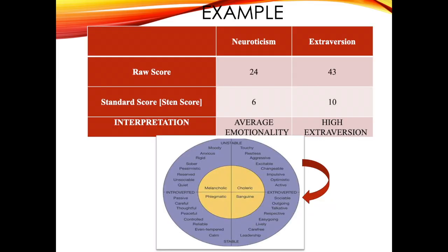Let's better understand with an example. Here the neuroticism raw score is 24 and the extroversion raw score is 43. When compared with the long scale data, the Sten scores come out to be 6 and 10 respectively. The interpretation would be: for neuroticism, 6 falls under the average emotionality range, so the person is average in emotionality. While on extroversion, with the highest Sten score of 10, that means the person is highly extravert.